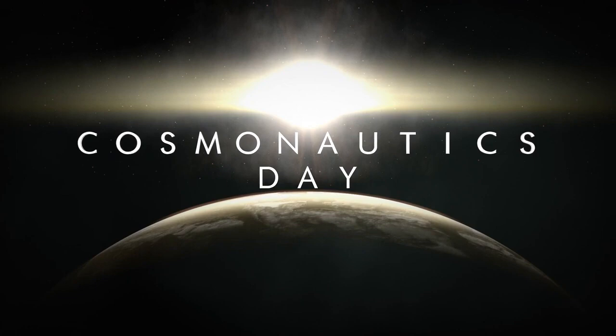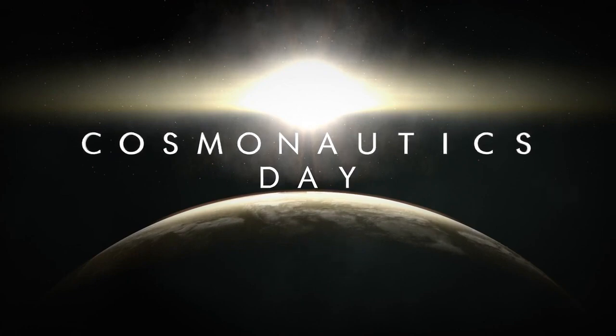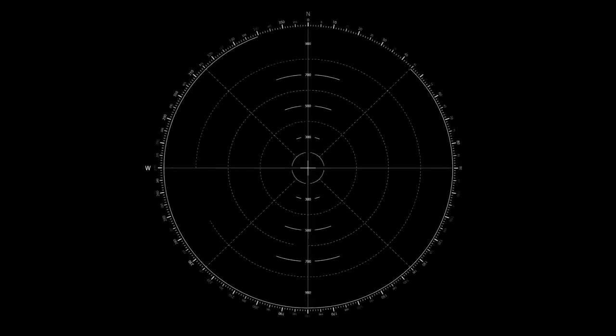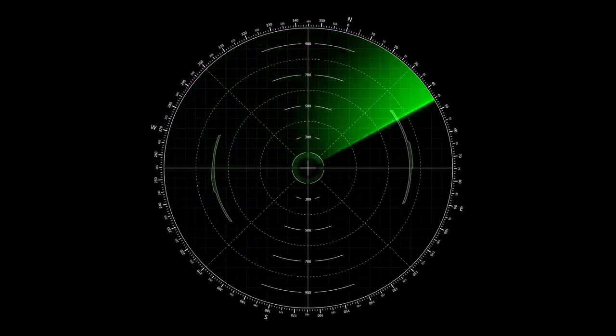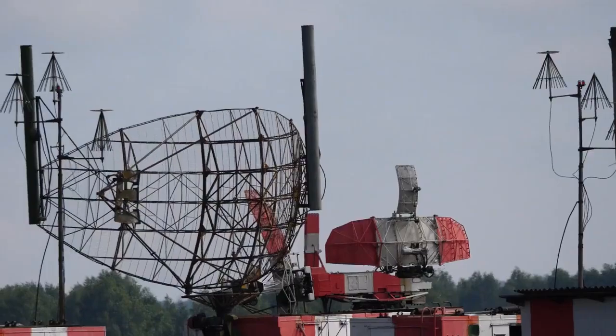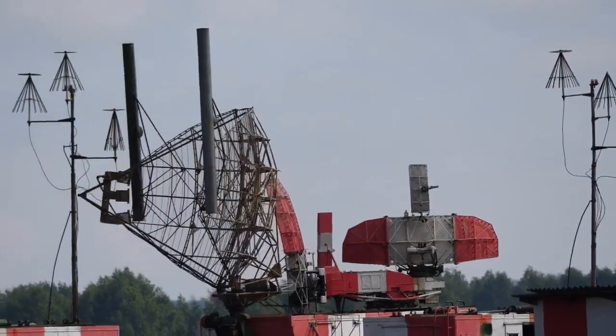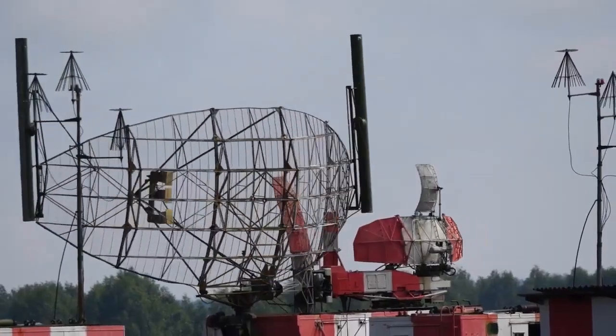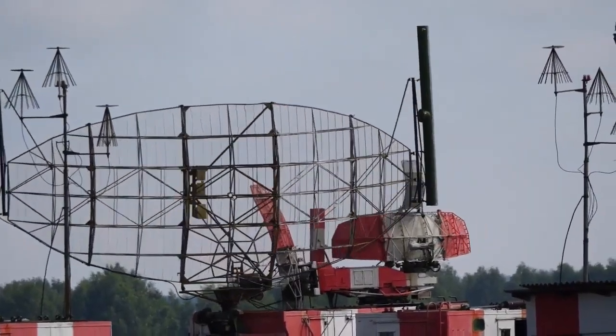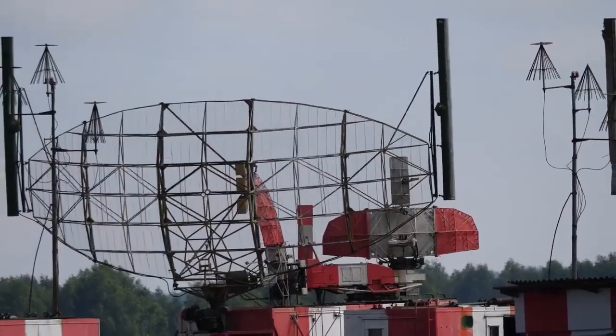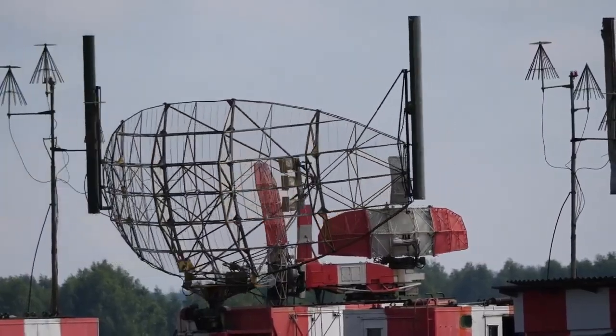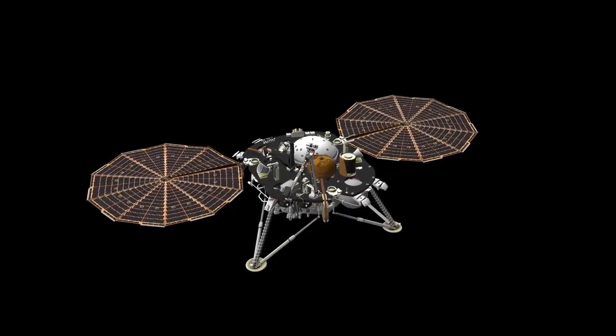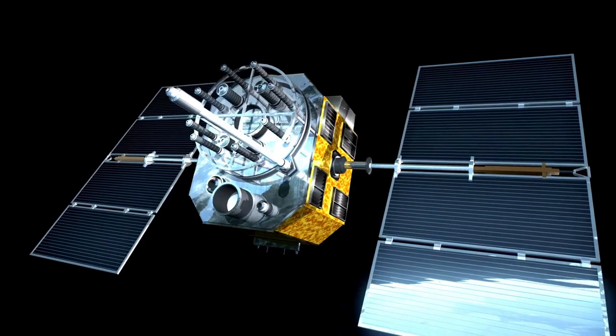Voyager 1's revival of a 43-year-old transmitter is another stunning display of engineering foresight. NASA's Voyager 1 spacecraft recently communicated using a backup radio transmitter that had been dormant since 1981. This milestone highlights the ingenuity and resilience of the spacecraft, which is now over 15 billion miles from Earth, making it humanity's most distant emissary.